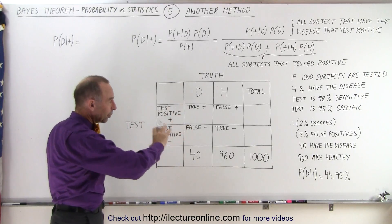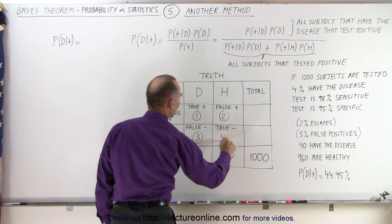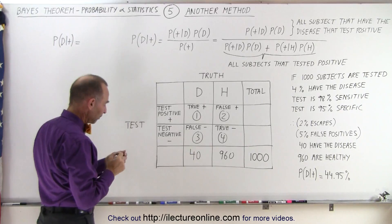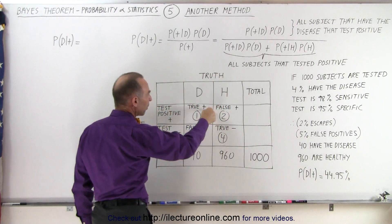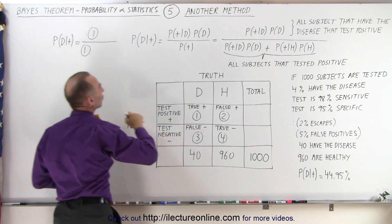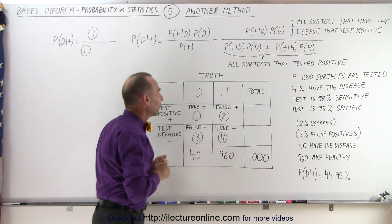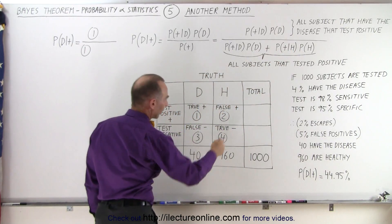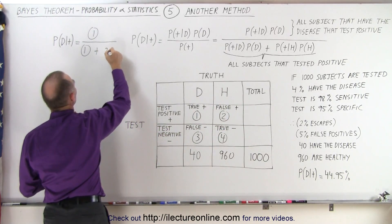Before we calculate what goes in those cells — which we'll do in the next video — we're going to label them 1, 2, 3, and 4, and then take those results and plug them into the equation. In the numerator, we want all the subjects who have the disease and test positive — those are the true positives, box number 1. In the denominator, we have box 1 again — those with the disease who test positive — multiplied by the probability they have the disease, plus box 2, which represents those who are healthy but test positive.